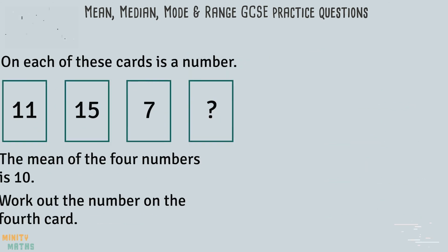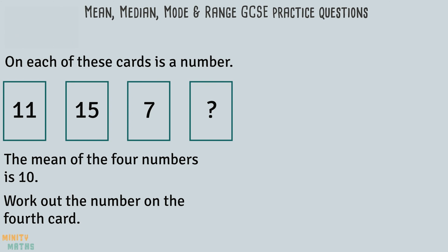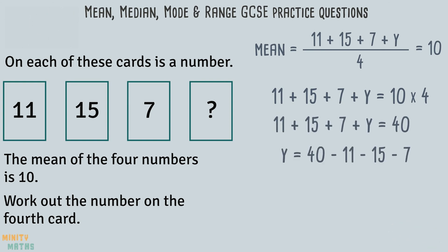This next question requires us to find the missing number on the fourth card. We are given a clue that the mean of all four numbers is 10. Knowing this, we can form an equation. We will use the variable y to represent the missing value. Now let's rearrange the equation so we can solve it for y. y equals 7, therefore the missing value is 7. You can check that this is correct by finding the mean of the four numbers. You should get an answer of 10.